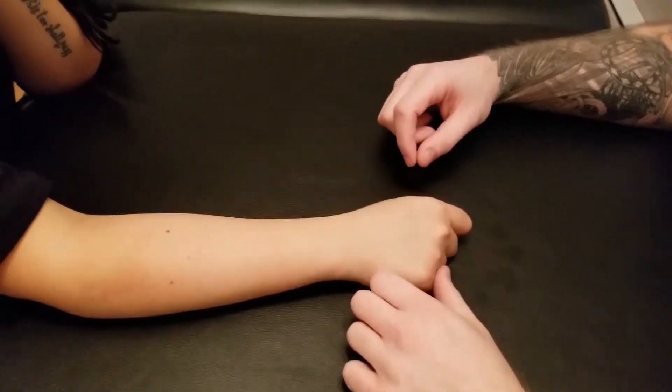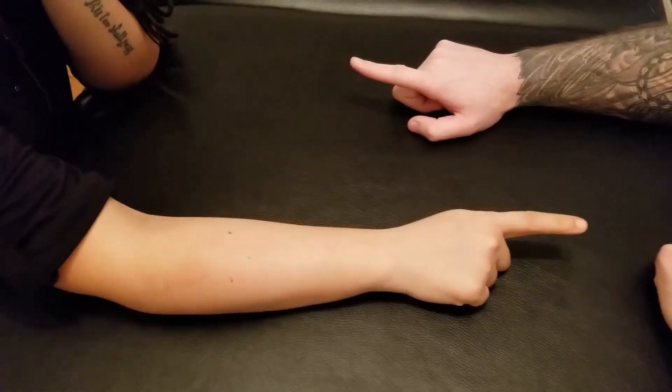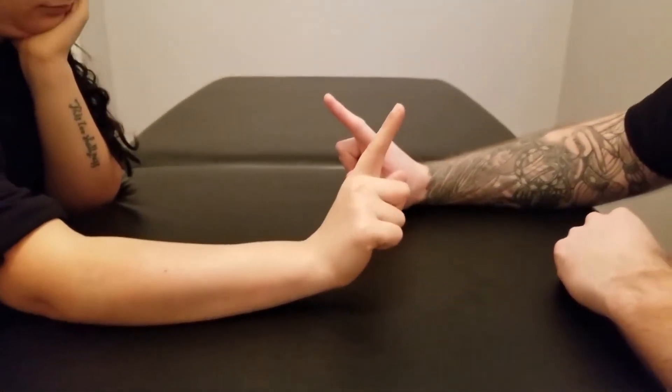We're going to be manual muscle testing extensor indicis. So what I'm going to have you do is start with a closed fist, extend that second finger out, and just add a little bit of wrist extension in.